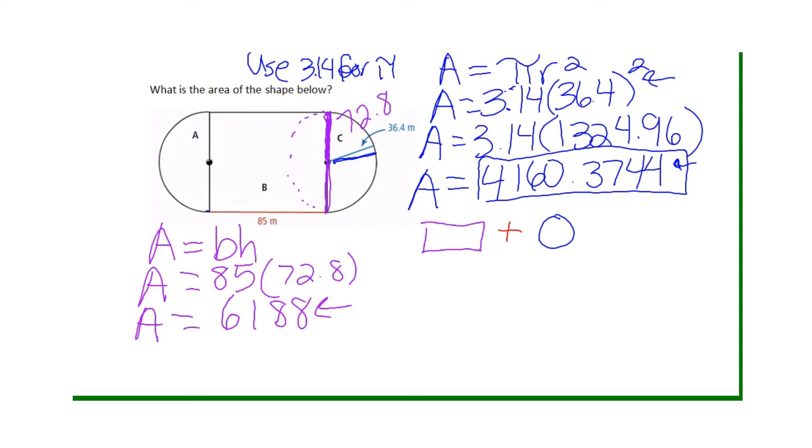So I'm going to substitute my information in. I know the area of the rectangle was 6,188 plus the area of the circle, which is 4,160.3744. Now when I combine those two, I get 10,348.3744.